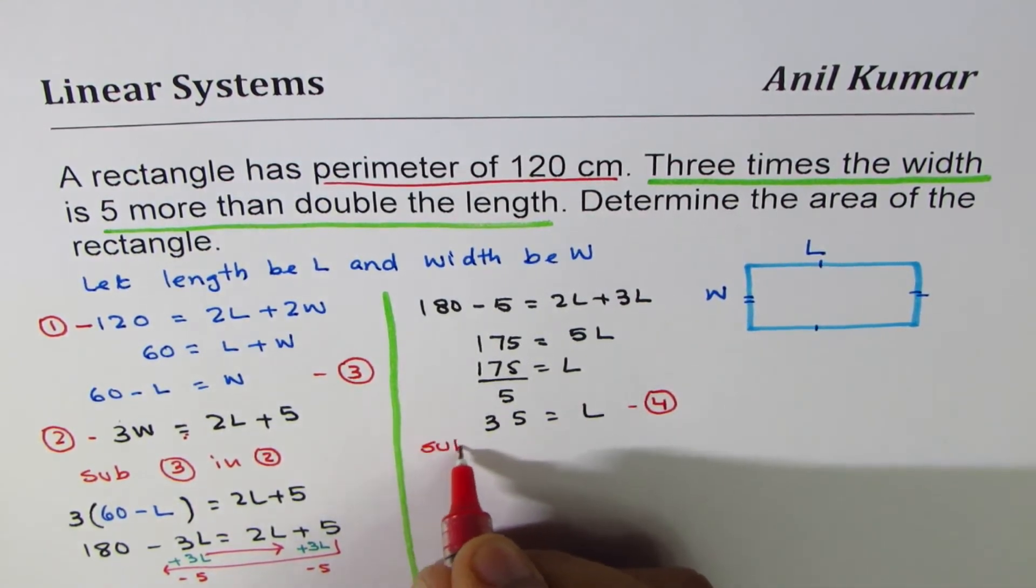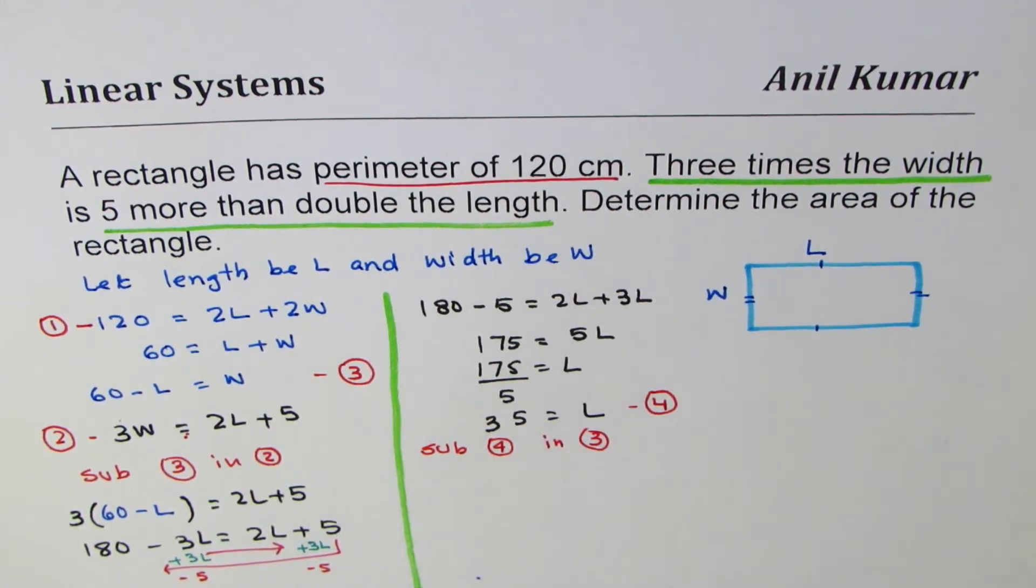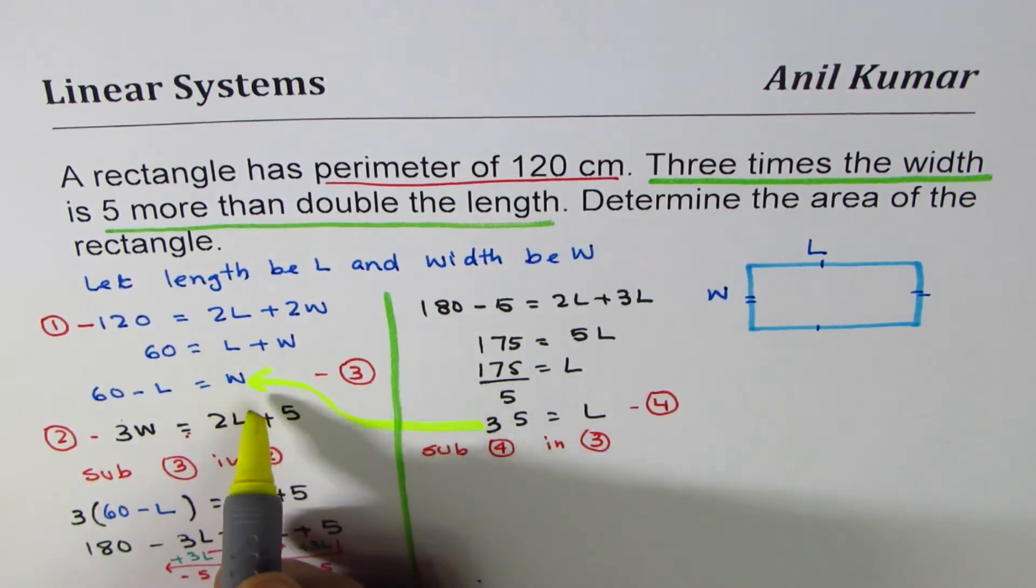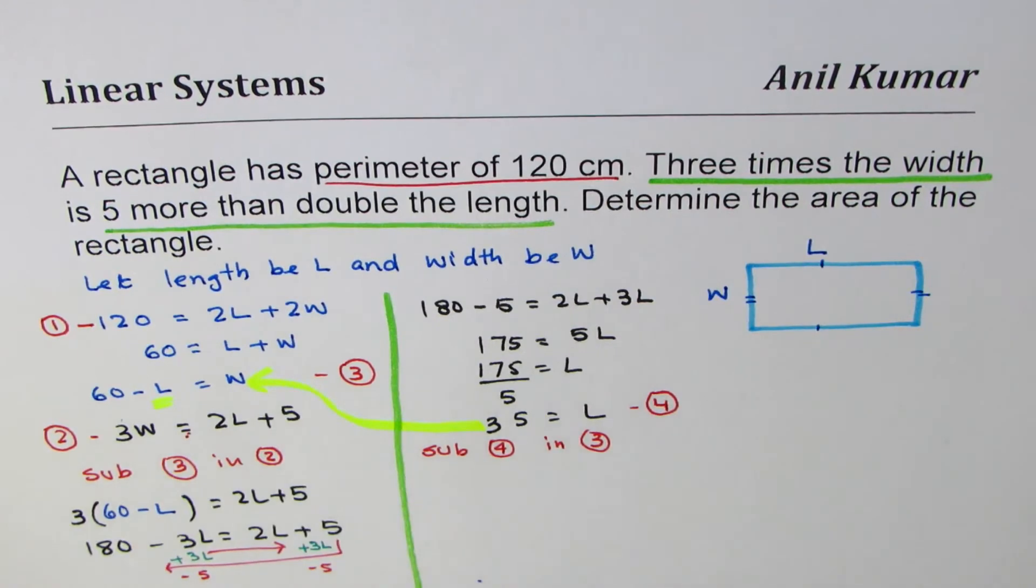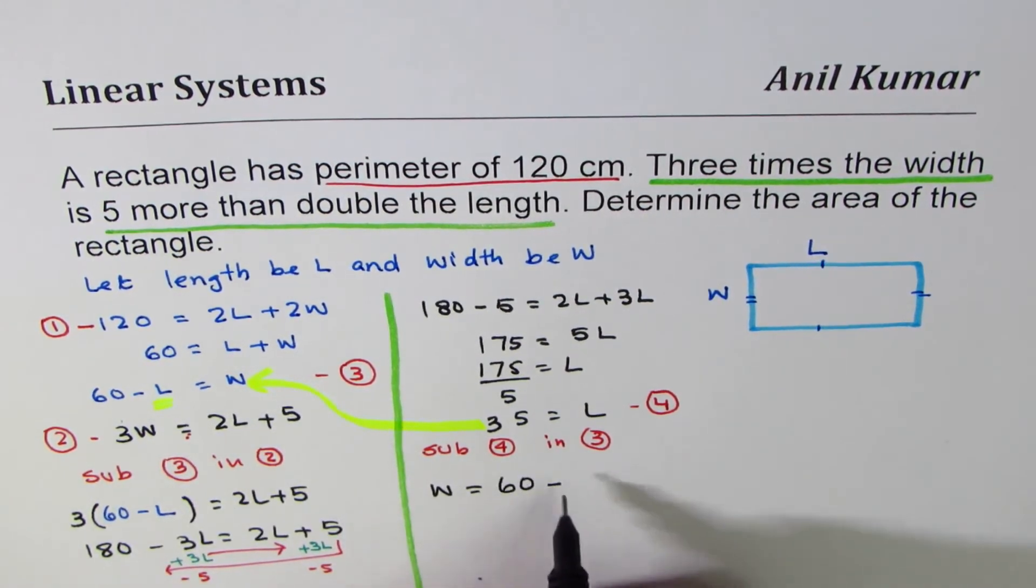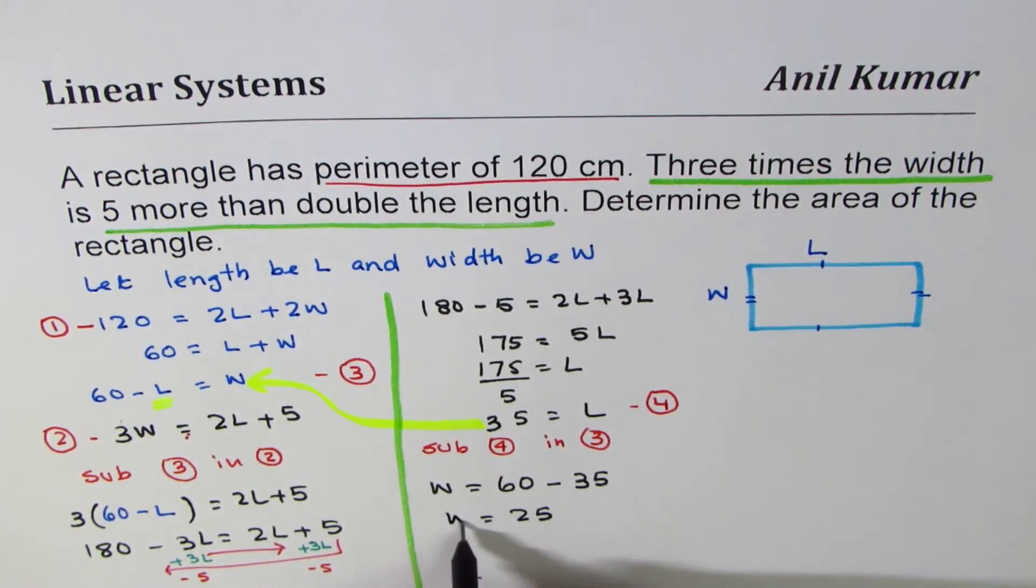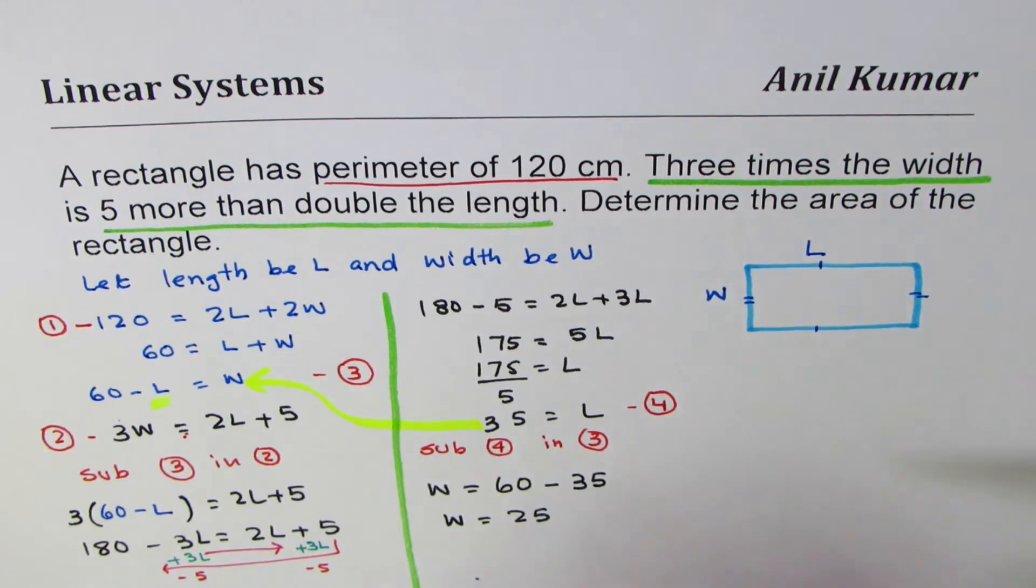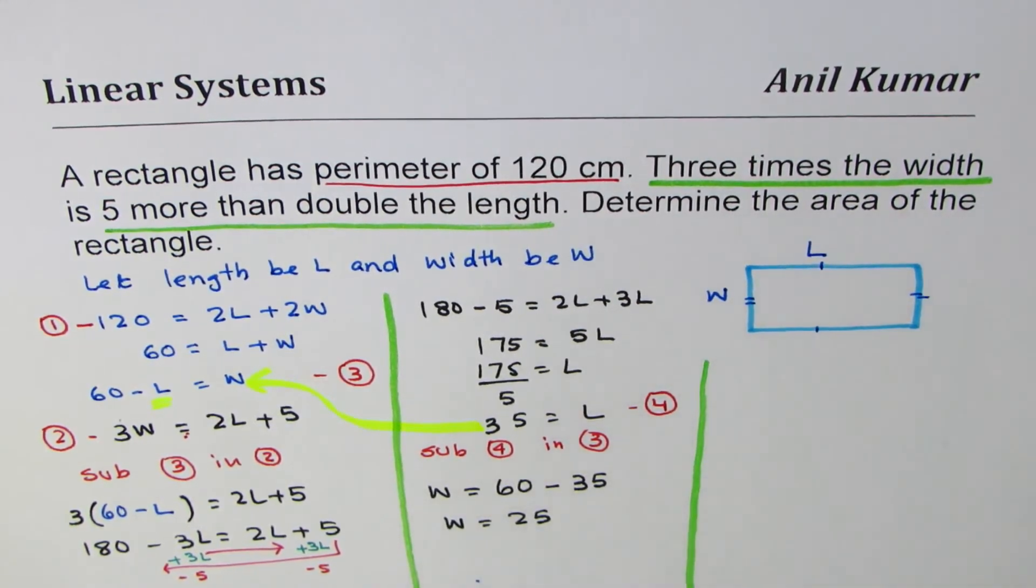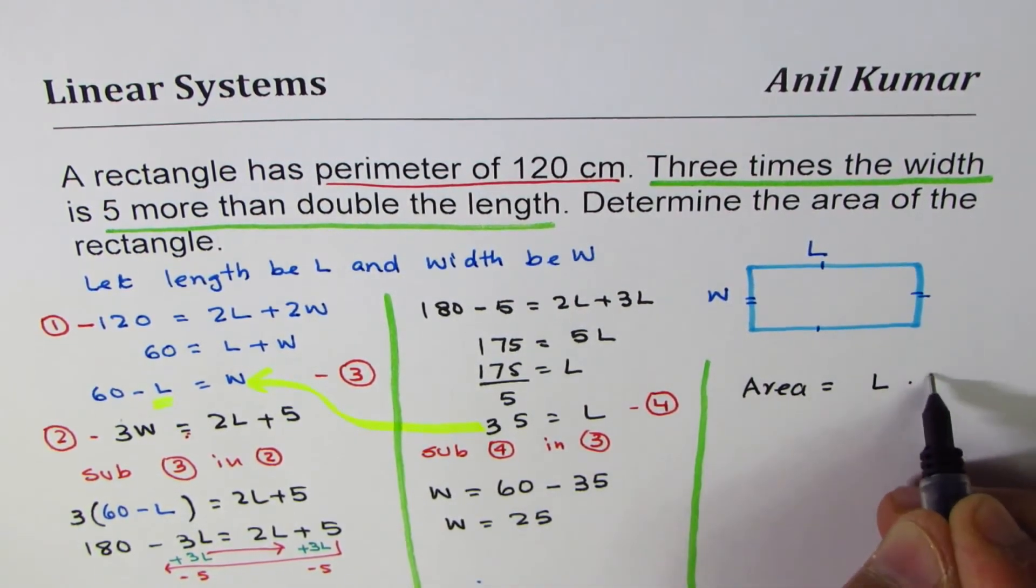Substitute equation 4 into equation 3. We can find width by substituting the value of L. W = 60 - 35, which is 25 centimeters. So we have found width and length. Now what is the area?